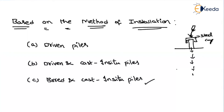Classification based on purpose or usage: compaction piles are used for densifying loose soils; tension piles resist uplift loads; anchor piles resist the anchor of sheet piles; batter piles resist lateral loads; fender piles are used in shipyard areas to protect concrete deck structures; and sheet piles are used to retain soil at different levels. These two classifications — load transfer and usage — are most important from the exam point of view.